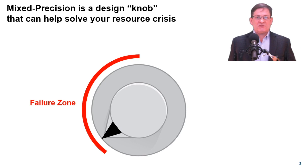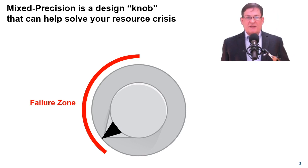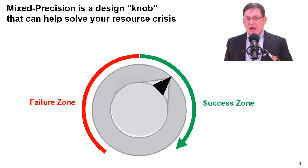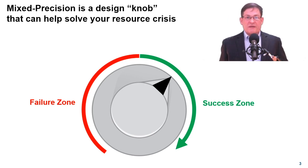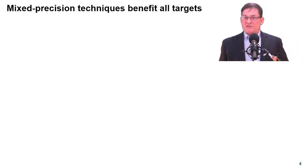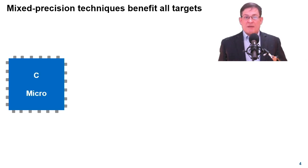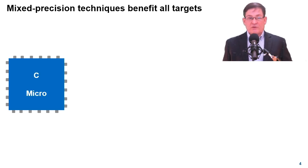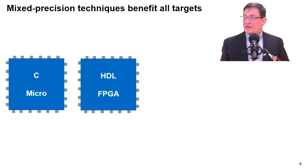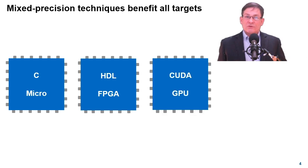Mixed precision techniques are conceptually like a design knob. Turning this knob can dramatically reduce resource consumption, thus making a project successful. Mixed precision techniques can reduce resource crises on any target: a microcontroller using C code, an FPGA or ASIC using HDL, or a GPU using CUDA.